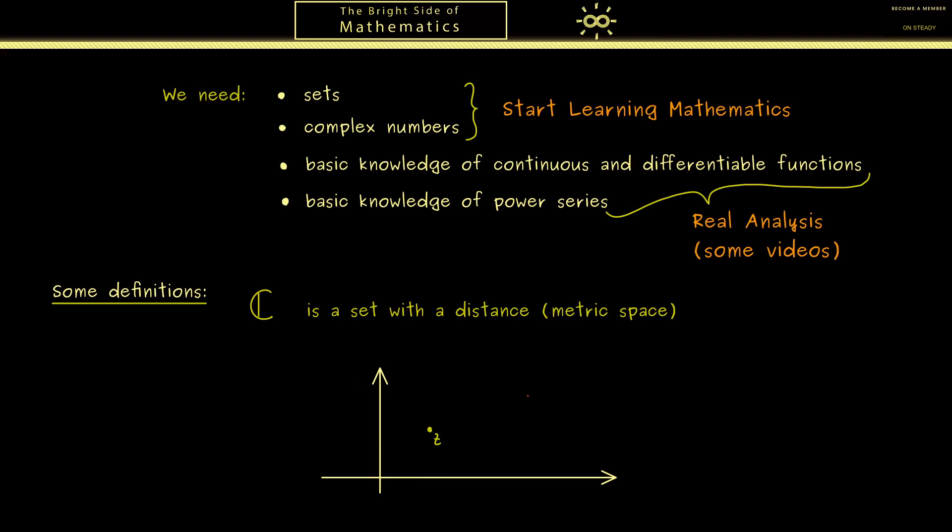Now you can imagine that we have a second complex number here we call w. And now what we want to do is to measure the distance between both points. Indeed this is what we calculate with the absolute value in C. And what we need is the absolute value of the complex number z minus w.